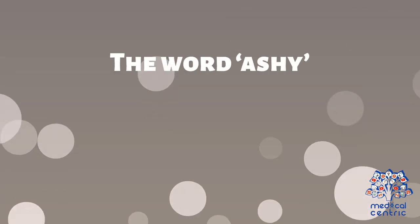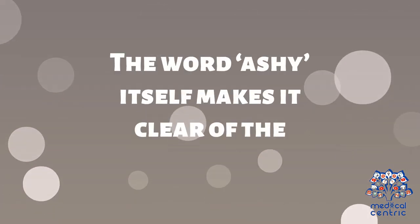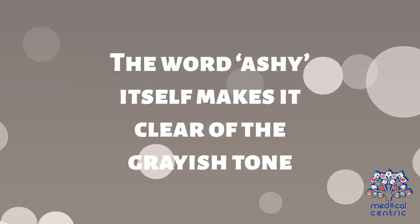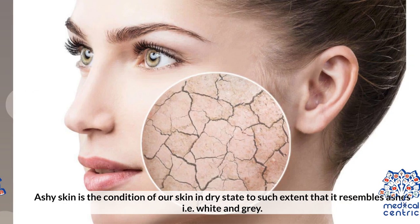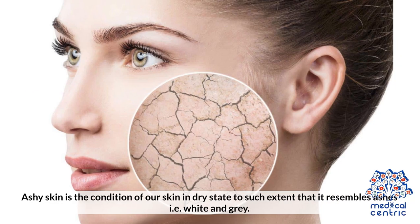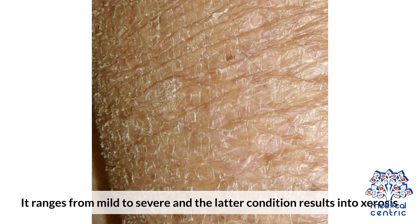What is ashy skin? The word ashy makes itself clear by its grayish tone. Ashy skin is the condition of our skin in a dry state to such an extent that it resembles ashes — that is, white and gray. It ranges from mild to severe, and the latter condition results in xerosis.